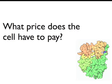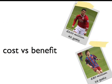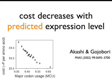So you can ask the question: what price does a cell have to pay in synthesising proteins? For example, what is the energy investment involved in synthesising the proteome? An analogy of this is a football team. Football teams have a transfer budget where they can spend on footballers — what benefit does a footballer bring versus the cost in terms of the transfer budget? Similarly, what is the cost of synthesising a protein versus the fitness advantage or the benefit? Akashi and Gojibori looked at how the cost of synthesising a protein relates to its predicted expression, and found that the biosynthetic cost of a protein decreases with major codon usage, where major codon usage is a predictor of gene expression.